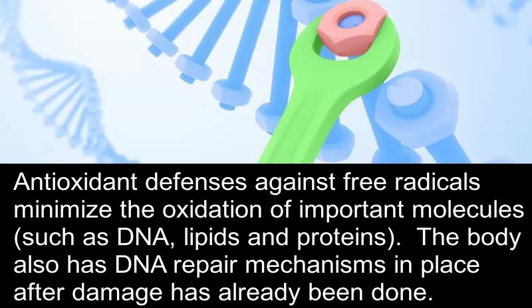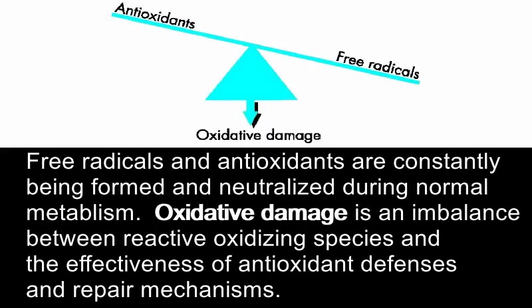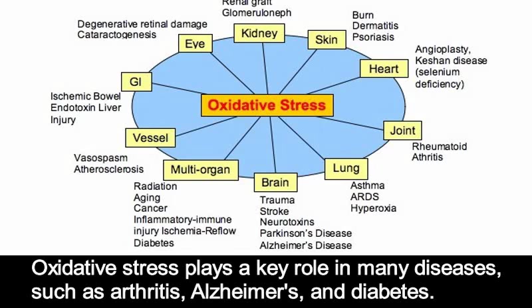The body also has DNA repair mechanisms in place after damage has already been done. Free radicals and antioxidants are constantly being formed and neutralized during normal metabolism. Oxidative damage is an imbalance between reactive oxidizing species and the effectiveness of antioxidant defenses and repair mechanisms. Oxidative stress plays a key role in many major diseases such as arthritis, Alzheimer's, and diabetes.